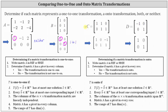Looking at the reduced row echelon form of matrix C, there is a pivot in row one, column one, and row two, column two. We do not have a pivot in every column, but we do have a pivot in every row. Therefore the transformation is not one-to-one, but the transformation is onto.